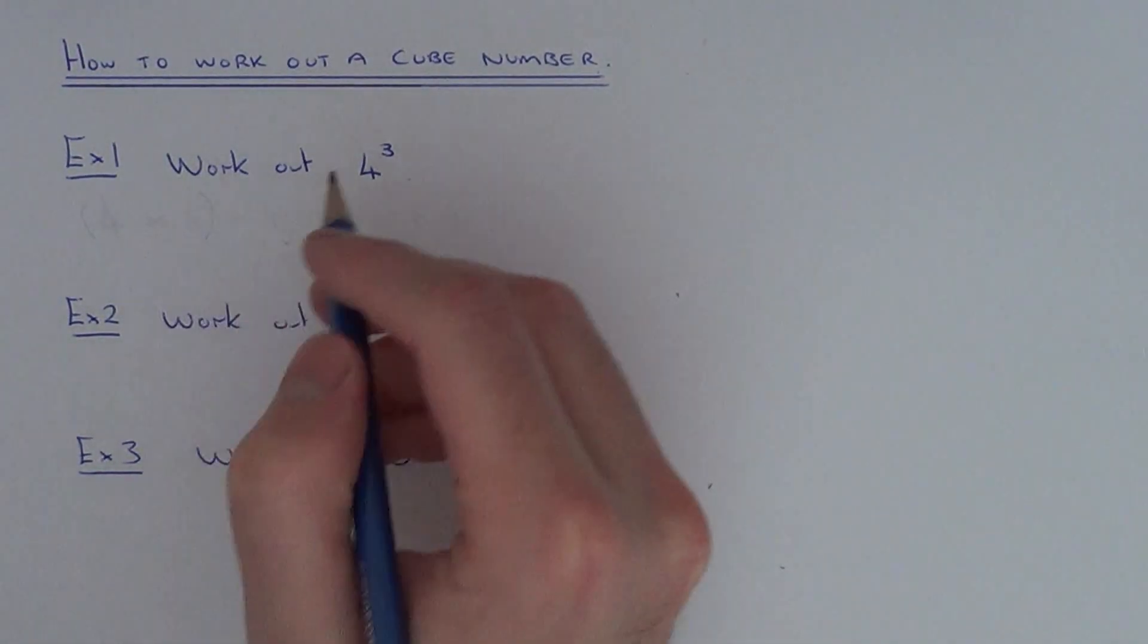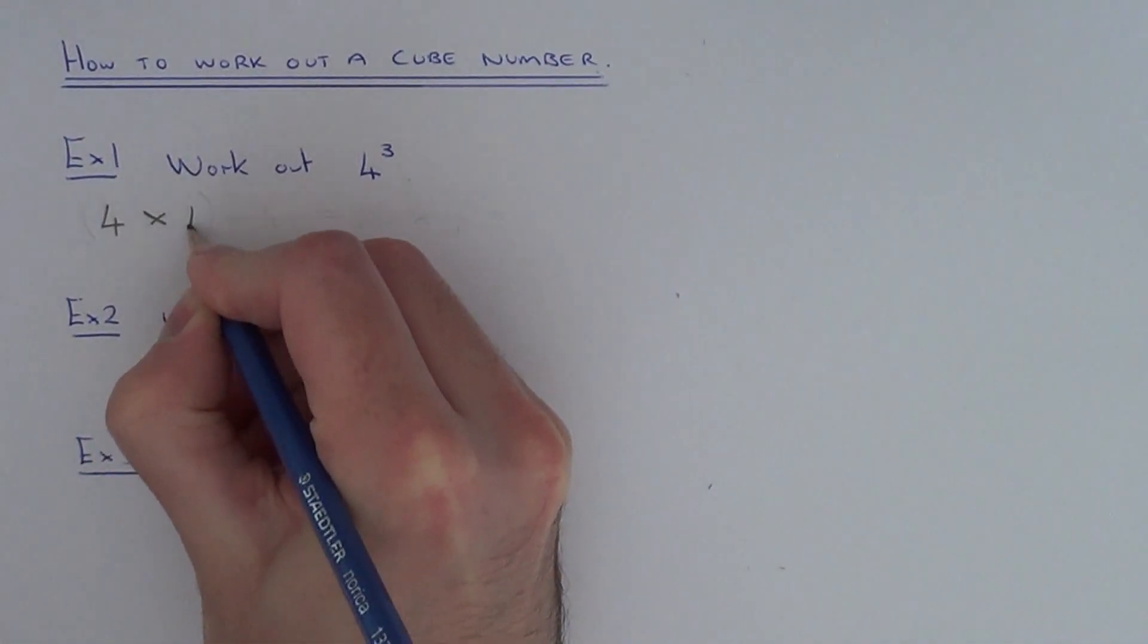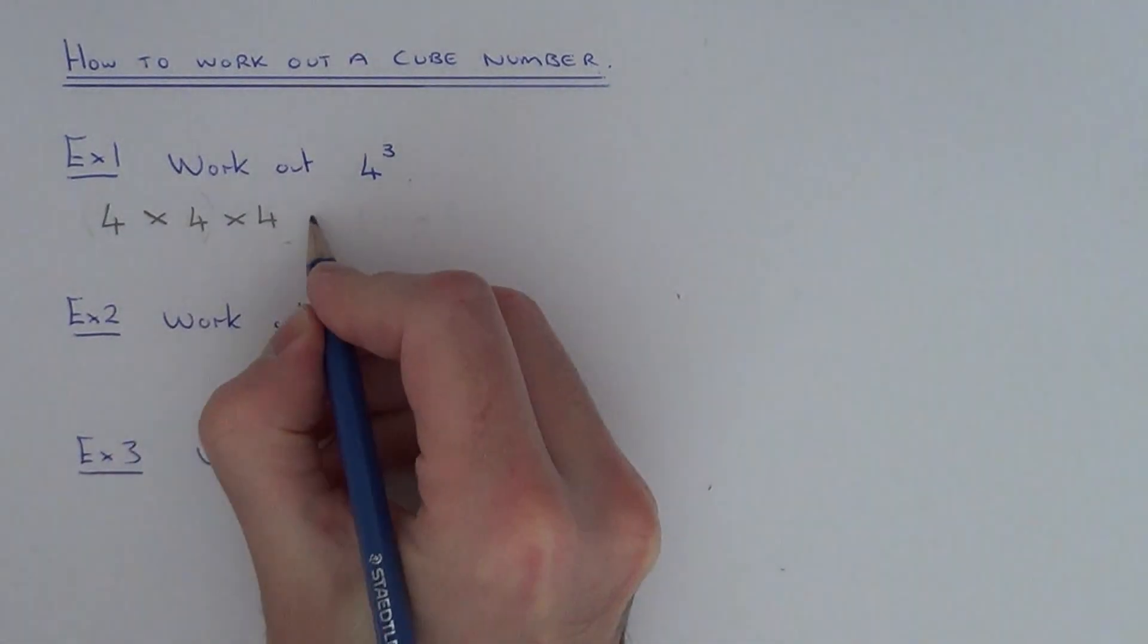To work out 4 cubed, write down 4 three times and put multiplication signs between the three fours.